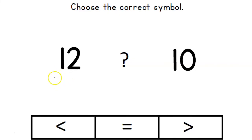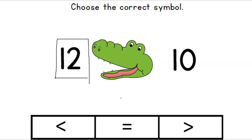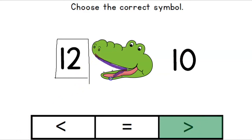Good job — number 12 is our biggest number. So which number is Mr. Alligator going to want to munch on? 12! Now his mouth is open to 12 because he's going to munch on it. What is the correct symbol? It's the greater than symbol, because his mouth is open ready to eat the number 12, so his mouth looks like this symbol.